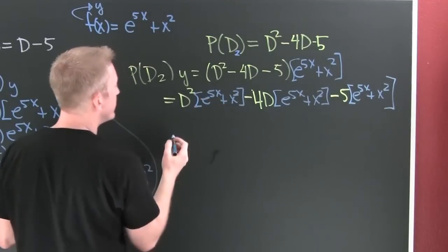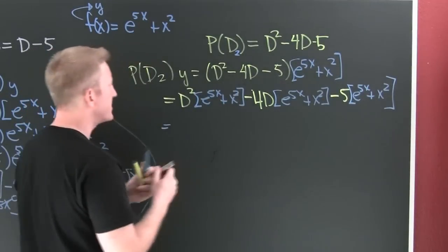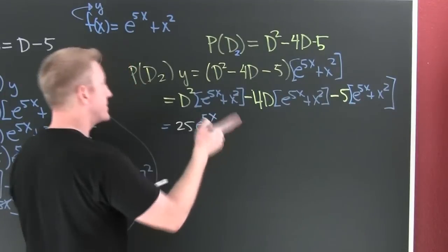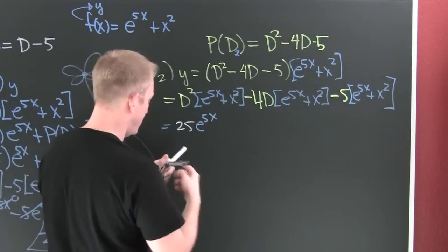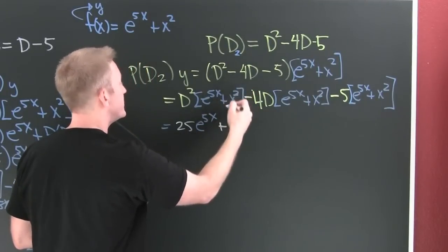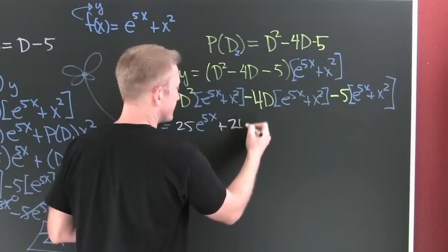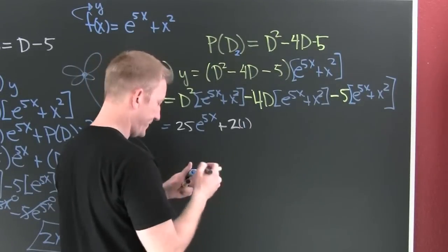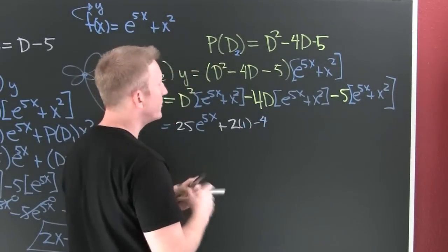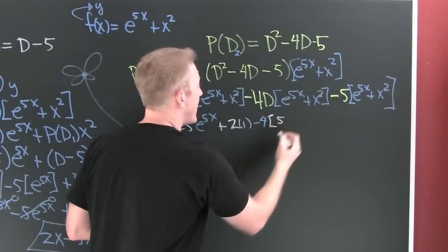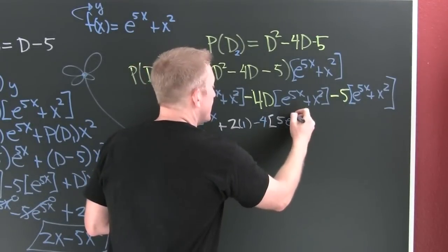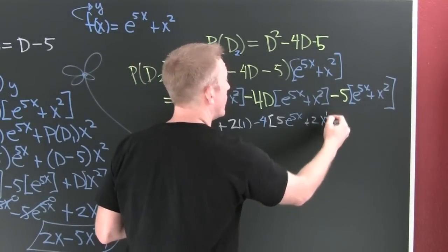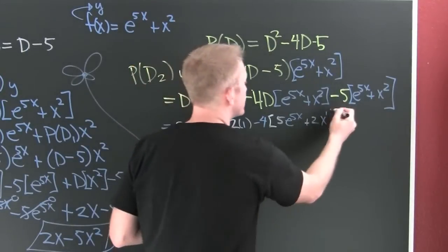Two derivatives: this is going to be 25e to the 5x, because I do it once and twice, plus two. Minus four times—I need to take a couple of derivatives of this guy—5e to the 5x plus 2x. Why? Because we only took one derivative this time.